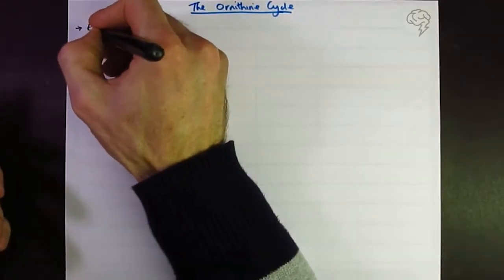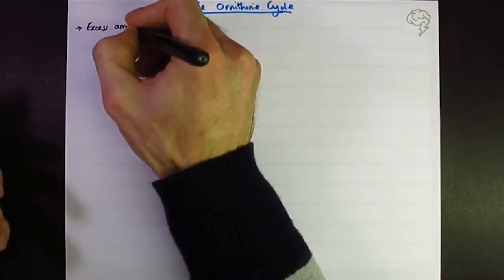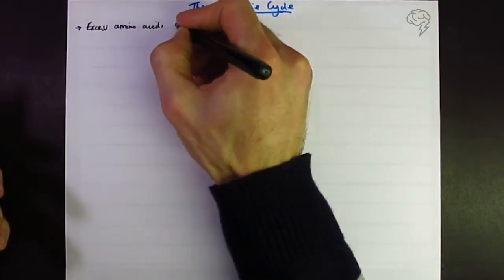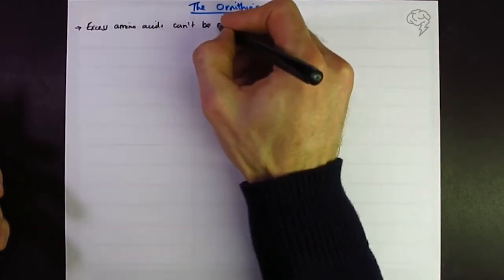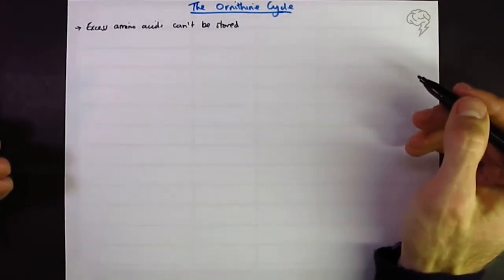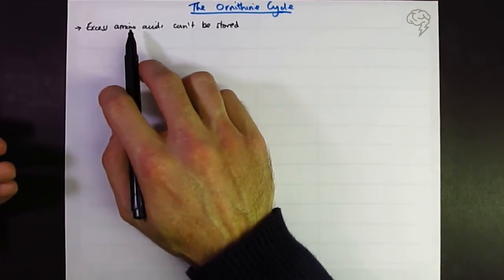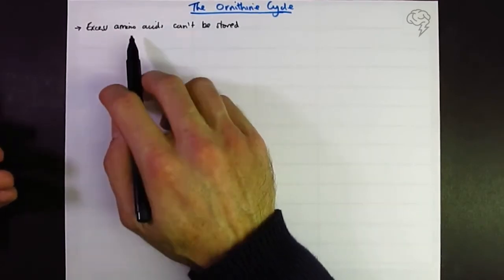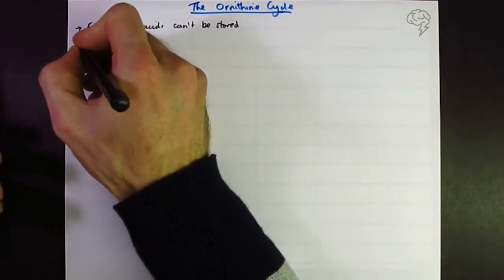I'm going to do notes and diagram as a rough outline. First up, excess amino acids can't be stored like fats and carbohydrates. They're broken down and excreted. The breaking down process is called deamination, where you're removing the amine group which is the bit with the nitrogen in.